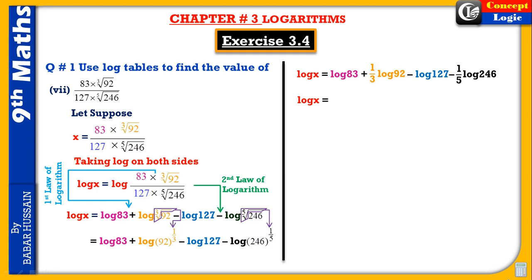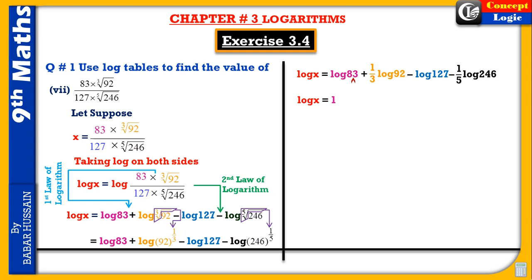Now we find log values. For log 83: first find its characteristic. Since there is no decimal visible, the decimal is at the right extreme. Between the point of reference (after first digit) and the decimal, there is one digit, so the characteristic is 1.